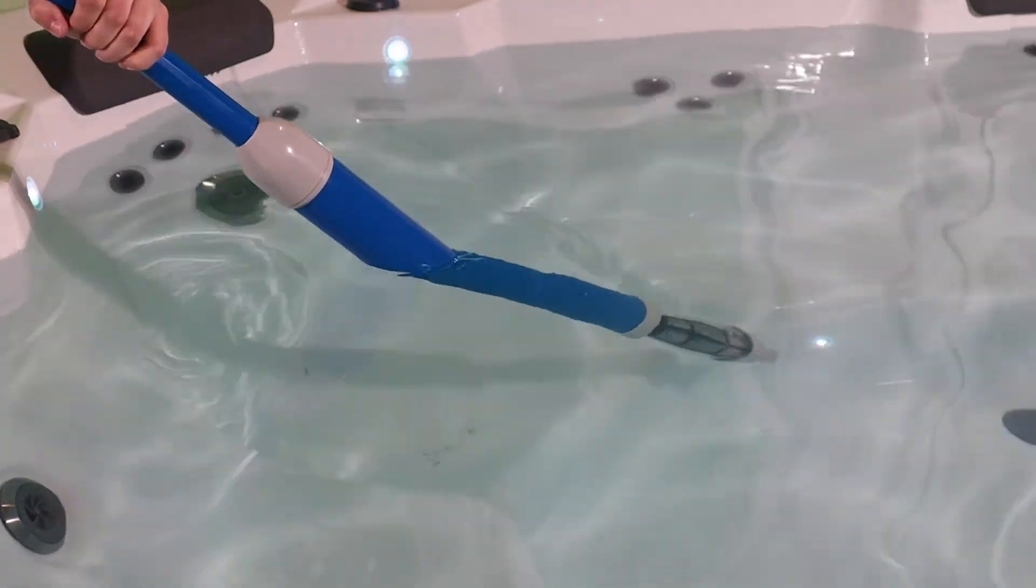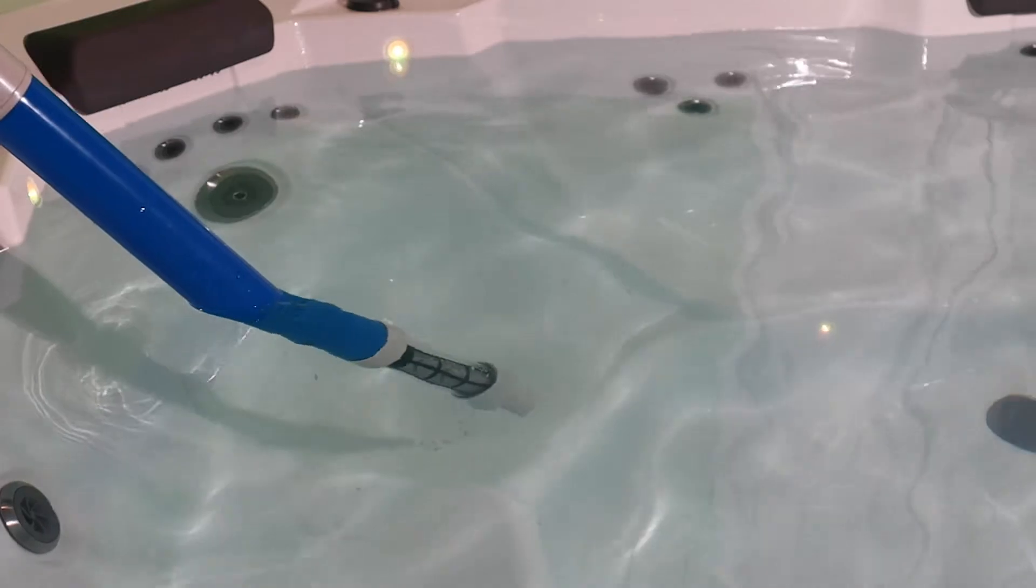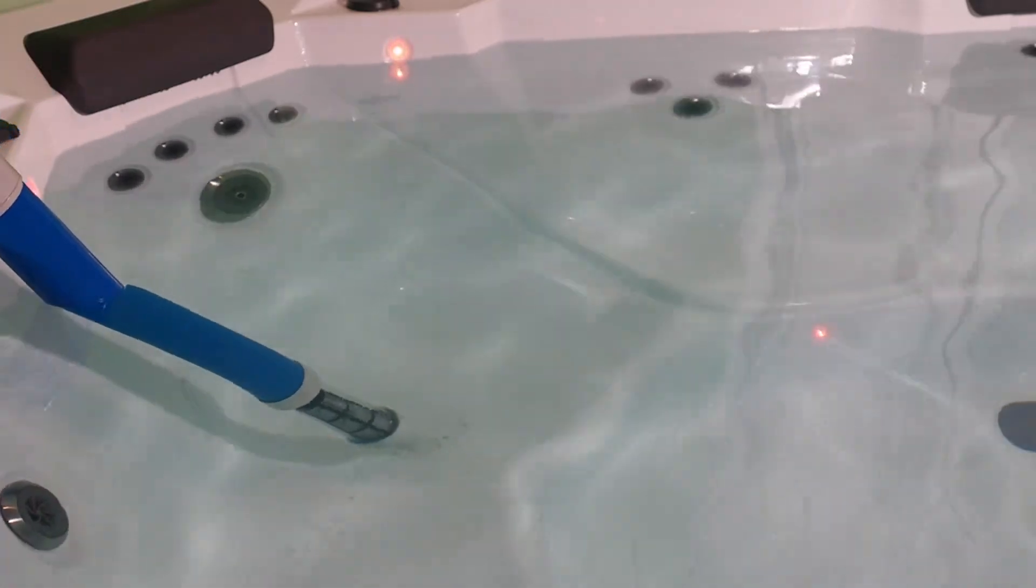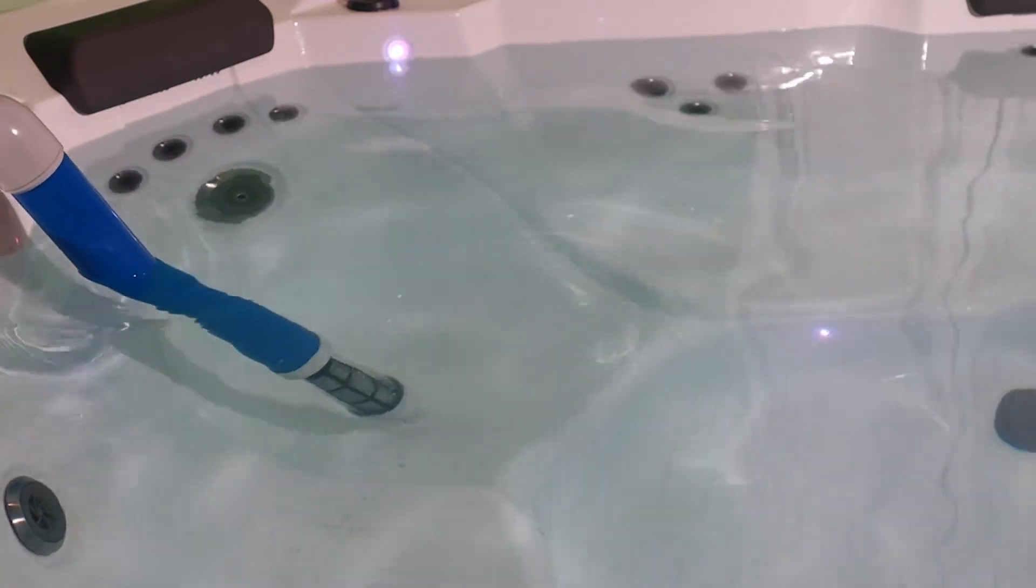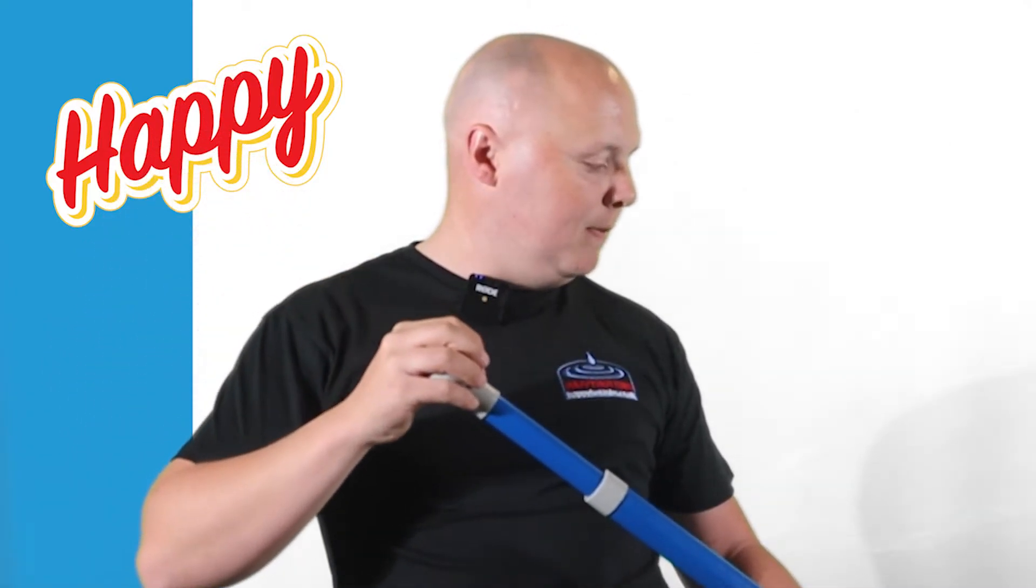You start the vac with the handle down. Gently get close to the area you need to vacuum and pull upwards. Just remember, the Sparvac will only vacuum when you're pulling up. To reset, simply push the handle back down slowly, and then you're good to go again.